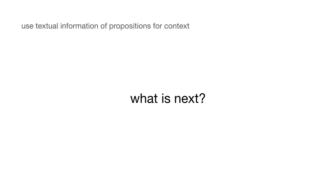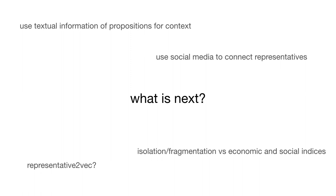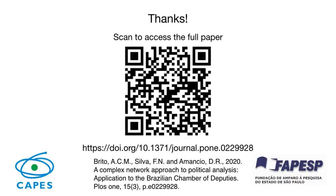What's next? We can use textual information from propositions to give more context about the relationships found among representatives. We can also use social media to connect representatives and compare with their voting patterns. Another direction is doing a representative-to-vec embedding so we can try analogies and visualizations of this space. We can also try to understand isolation and fragmentation versus other economic or social entities. Finally, we can study the predictive potential of the proposed framework. Thanks — you can access the full paper by scanning the QR code or clicking on the link.